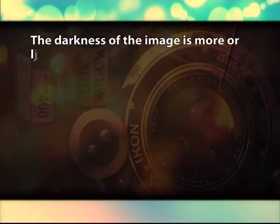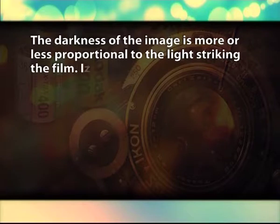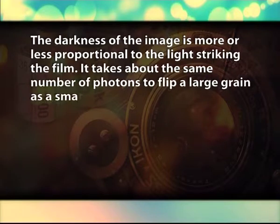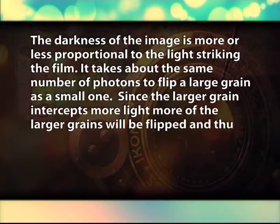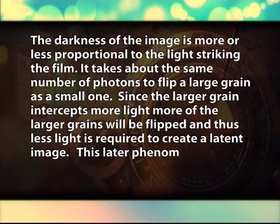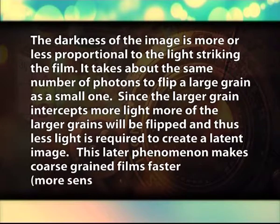In the meantime, thermal energy is jiggling the grain and tending to drop it back into its normal state. If enough photons strike the grain in a given time, the grain flips to a latent state and sticks there. We then have a grain that can be turned opaque chemically. Thus, the photons build up a latent image that is later developed. The darkness of the image is more or less proportional to the light striking the film. It takes about the same number of photons to flip a large grain as a small one. Since the larger grain intercepts more light, more of the larger grains will be flipped, and thus less light is required to create a latent image. This phenomenon makes coarse-grained films faster and more sensitive.